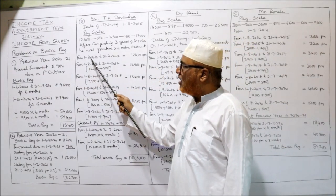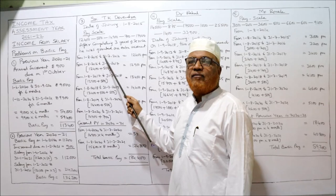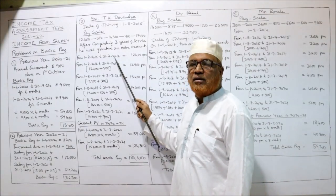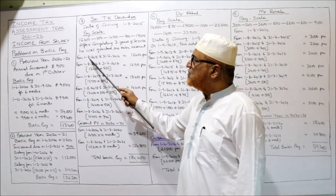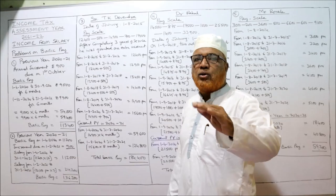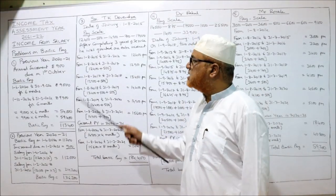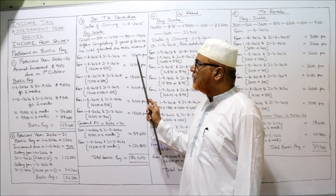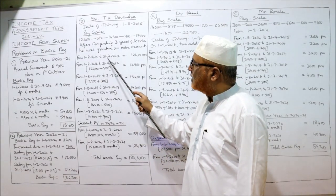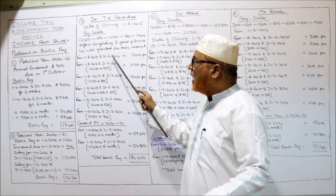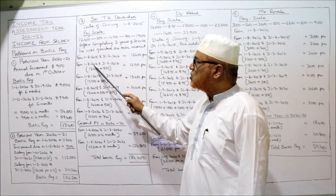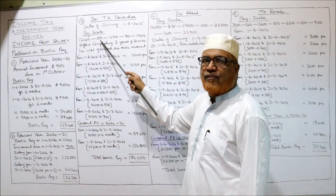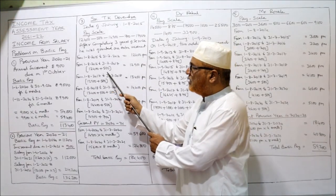We start calculations from 1st August 2015. From 1st August 2015 to 31st July 2016 — one year — the monthly salary is 12,400. The next year begins from 1st August 2016 to 31st July 2017. During this year there is an increment of 500, so salary becomes 12,400 + 500 = 12,900 per month.